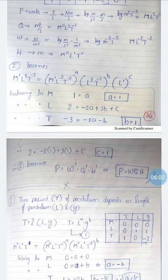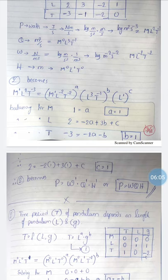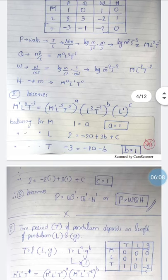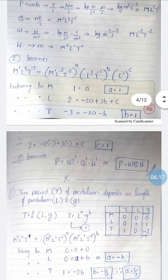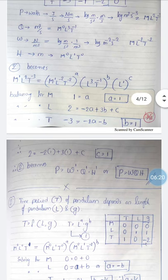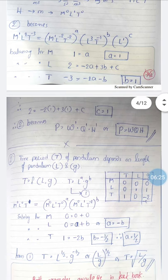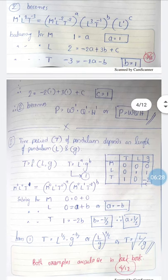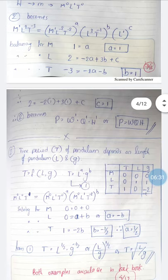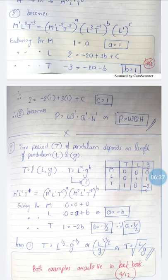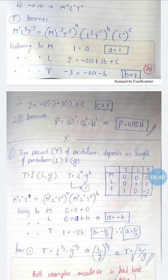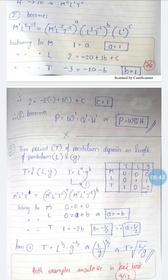Balancing the powers of M, L, and T on both sides: balancing M gives a = 1; balancing T gives −3 = −2a − b, and substituting a = 1 gives b = 1; balancing L gives 2 = −2a + 3b + c, and substituting a and b gives c = 1. Therefore the equation becomes P = w¹ · Q¹ · H¹, which matches the standard formula P = ρgQH, where ρg is the weight density w.